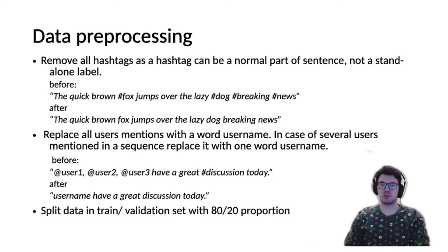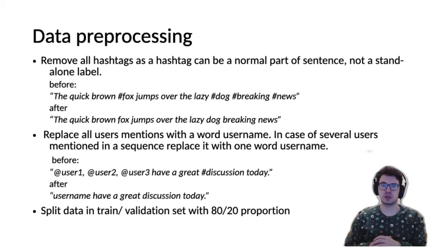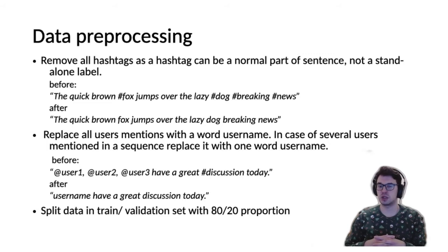Our data pre-processing steps are rather simple because we used only pure text from a tweet, no meta information. We just need to get rid of hash signs and hashtags which many people use within sentences, as they can confuse the tokenizer and BERT model and lead to lower accuracy. For example, 'the quick brown #fox jumps over the lazy #dog #breaking #news' becomes 'the quick brown fox jumps over the lazy dog.' Another part is to replace all user mentions with the special word 'username.'